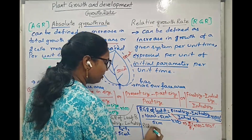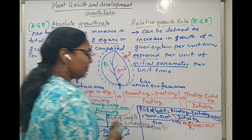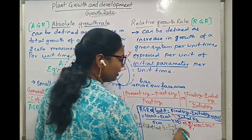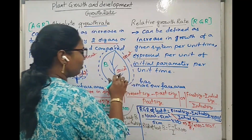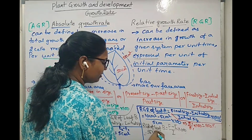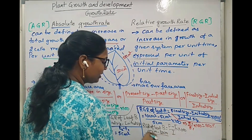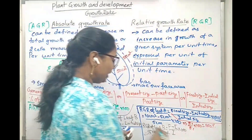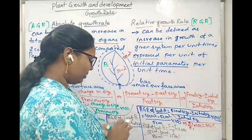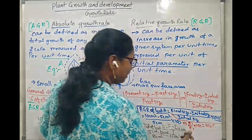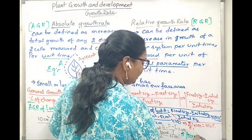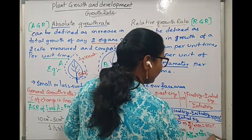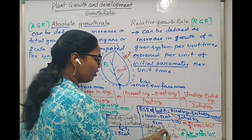Then what about the relative growth rate of leaf B? Using the same equation — final size minus initial size divided by initial size, multiplied by 100 — we get 55 cm² minus 50 cm², divided by 50 cm², multiplied by 100. That is 5 divided by 50, multiplied by 100, which equals 10%. So the relative growth rate of leaf B is 10%.